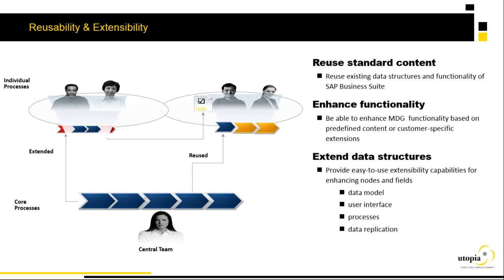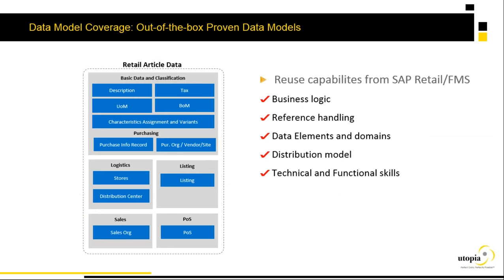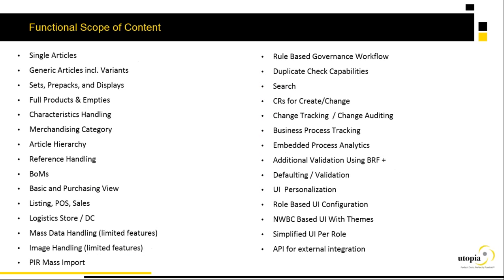Reuse and extensibility: existing data structures from SAP Business Suite and IS Retail functions are reused. Custom append structures can be extended with your data model, user interface, processes, and data applications. The out-of-the-box data model covers basic data and classification including tax, units of measure, BOM, characteristics, variant configuration, purchasing info records, purchase org vendor sites, stores, distribution centers, listing, sales org, and point-of-sale data. Functionality includes creating single articles and generic articles, with the solution expandable and extensible.